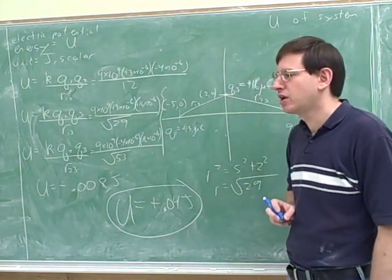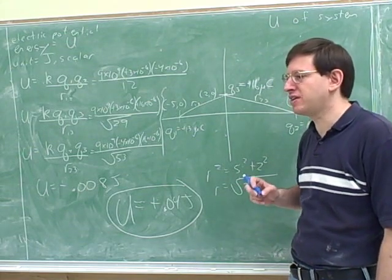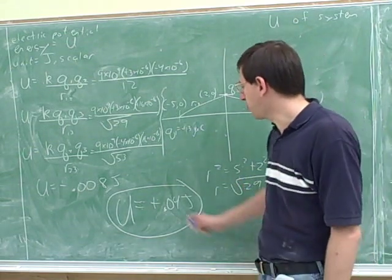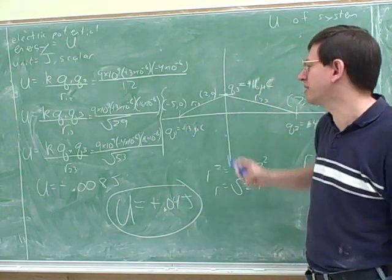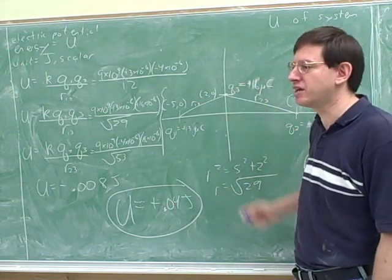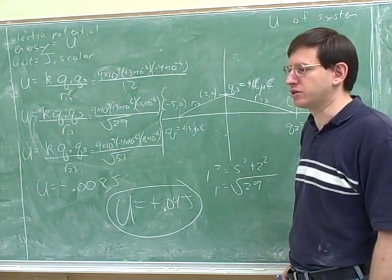Well, that tells us that if all of the particles started at infinity, it would take .04 joules of work to move them into these positions. And I wanted to talk about this because this is a common way that this is tested, where they ask you how much work would it take to move all the particles into a certain position.